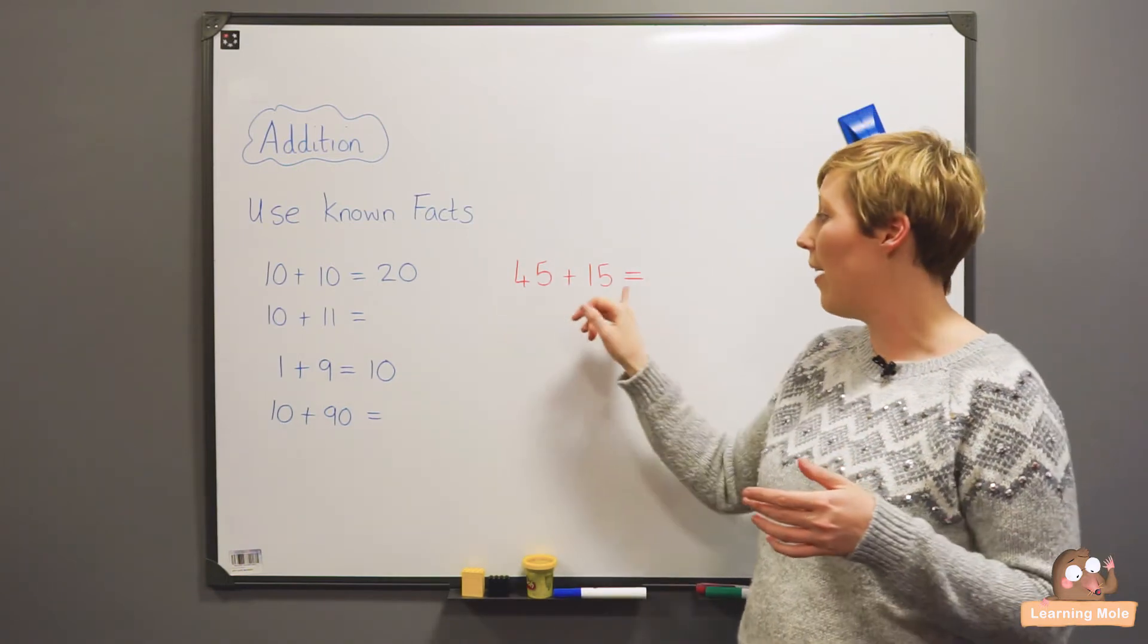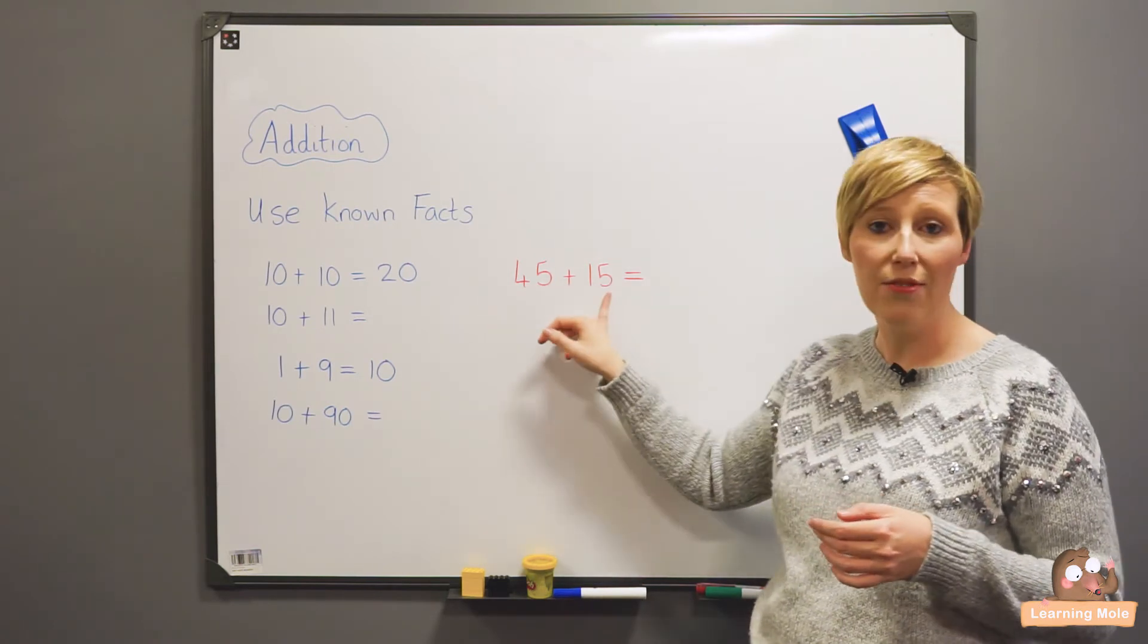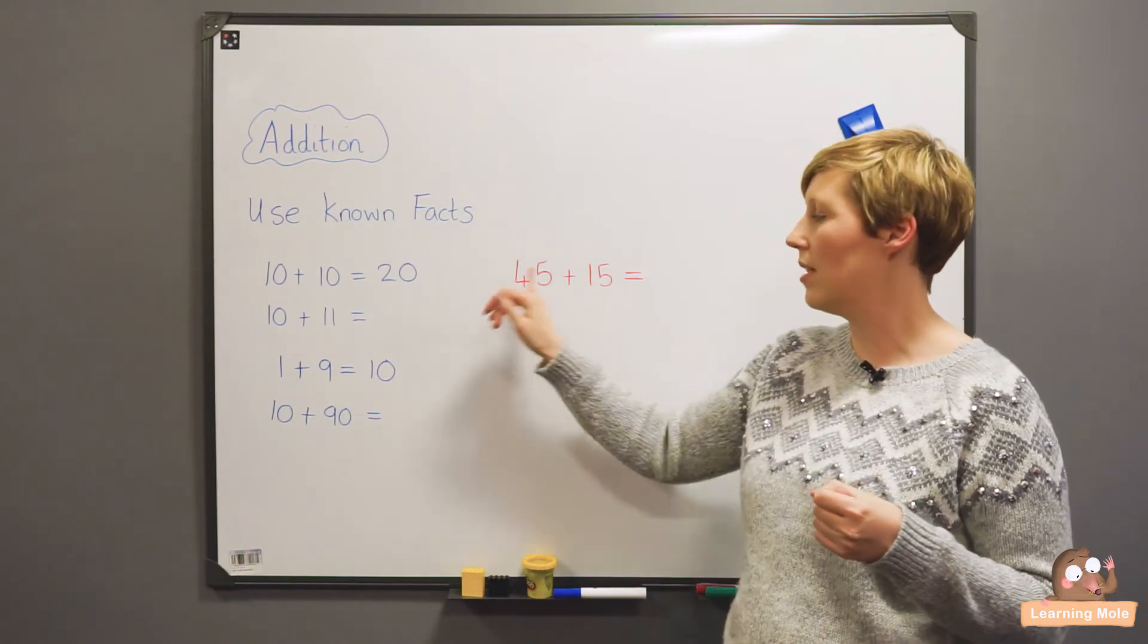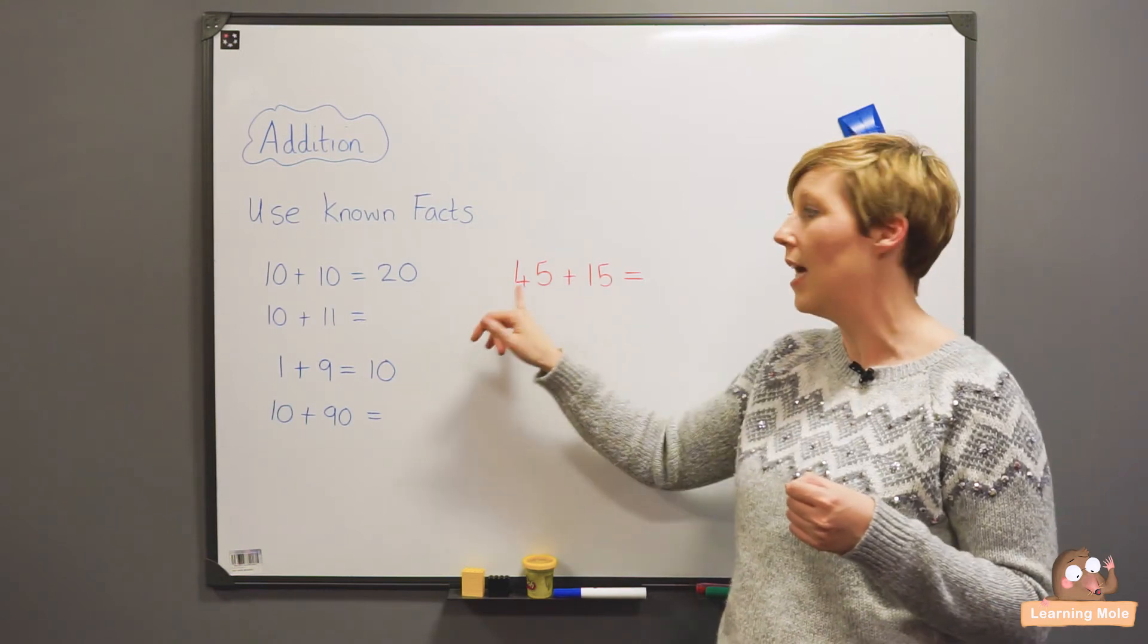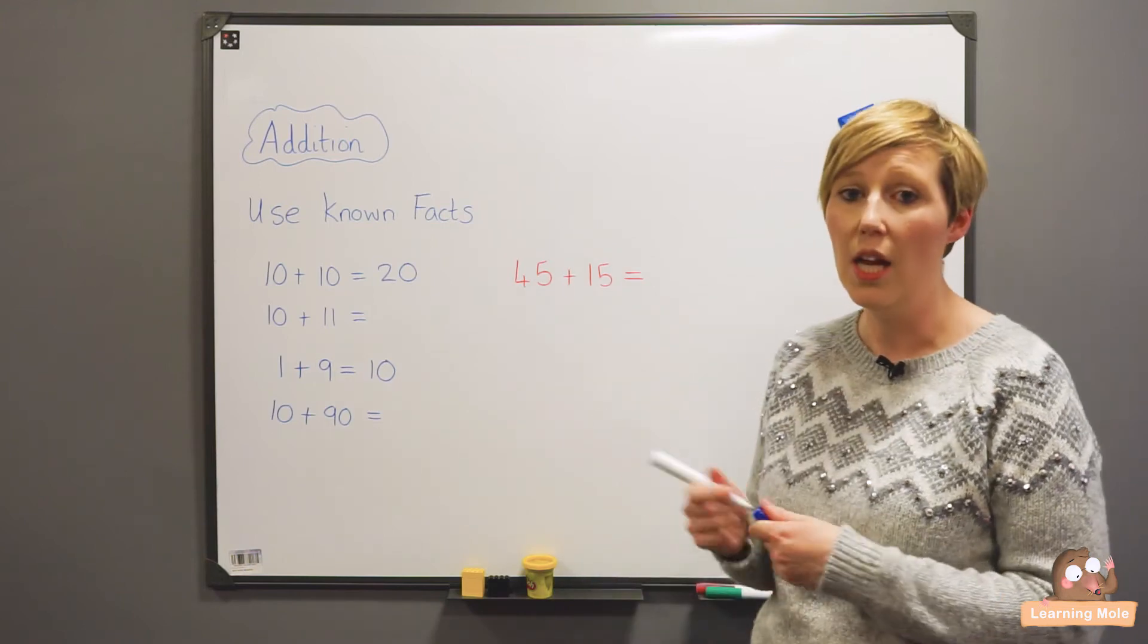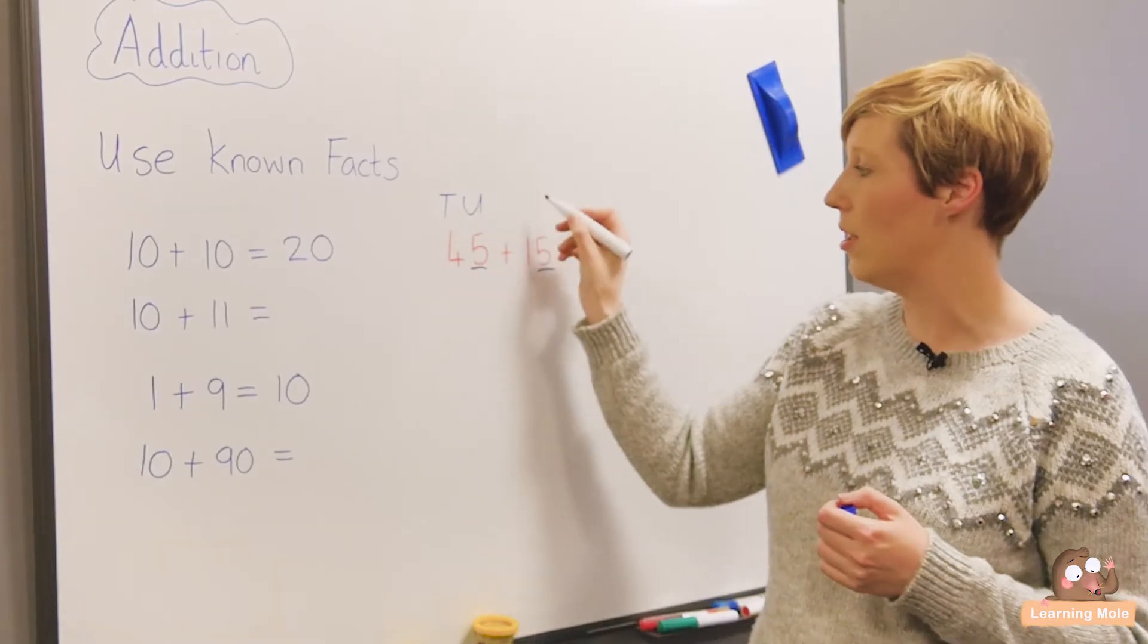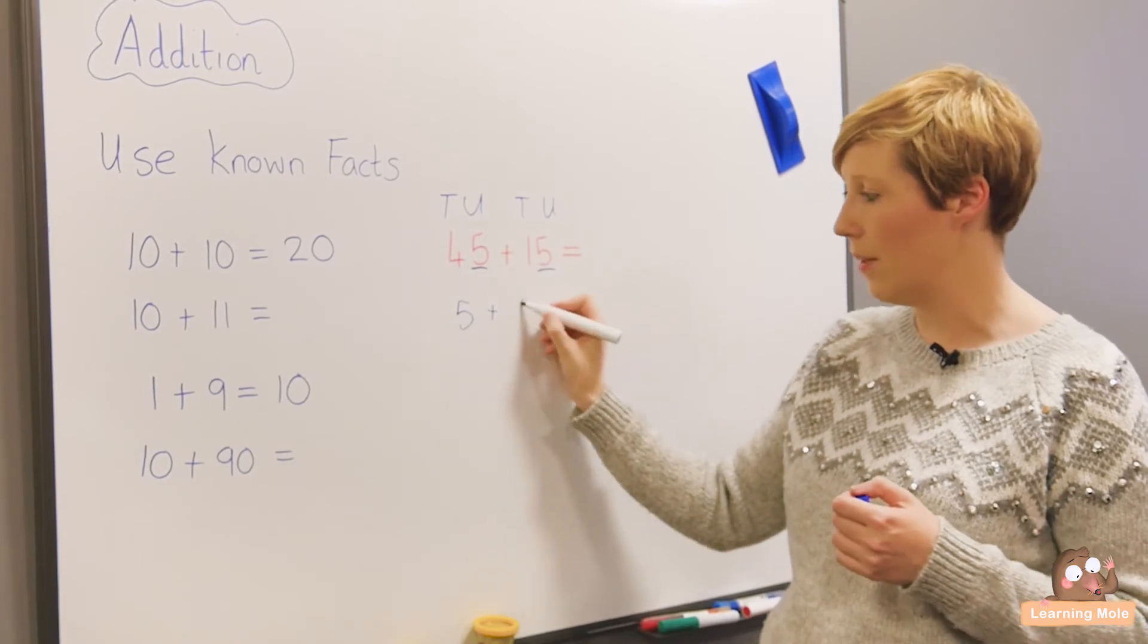Even on to the idea of 45 plus 15. Immediately children will be able to see their 5 and their 5 there. They know that 5 plus 5 is 10, so they know that they've already got 10 in there, and then they can just add their tens numbers, their 40 and their 10 to get 50, and then 10 plus 50 is 60. So you'd actually talk through that with your child. They might say immediately, oh I see a 5 plus a 5, they're both units. You might even want to identify tens and units for your child and they'll say that 5 plus 5 equals 10.